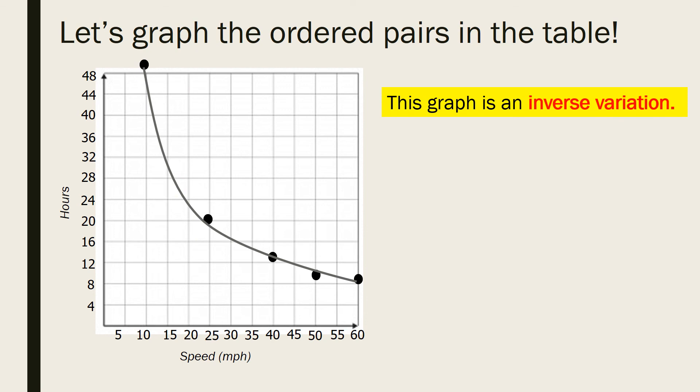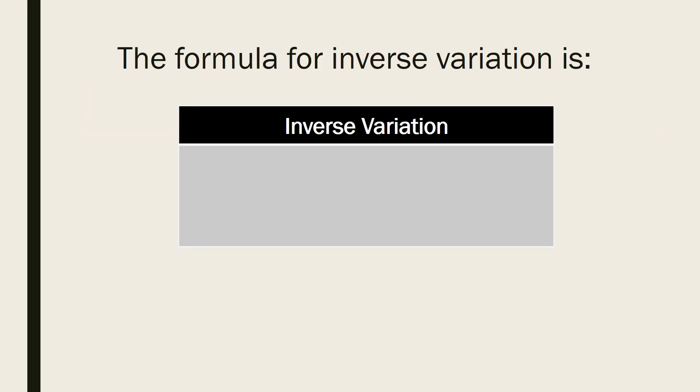This graph is an inverse variation. It is a curved graph. It does not go through zero, zero. The formula for inverse variation is y equals k over x. The variable k still represents something called the constant of variation.